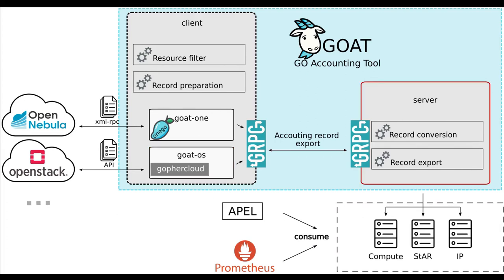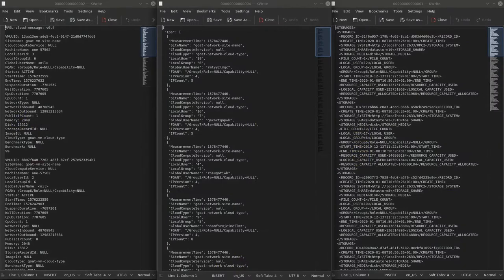Collected data are processed into records in the GO server. The client and the server communicate via a gRPC protocol supported by many languages, so other GOAT clients don't have to be written in GO. The generated records have predefined structures and formats. At this moment, GOAT handles cloud usage records, IP records, and storage records, and supports formats like JSON, XML, or templating.